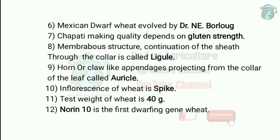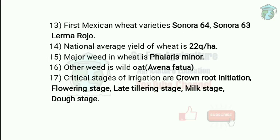Nor Intend is the first dwarf gene wheat variety — this is very important. The first Mexican wheat varieties brought to India were Sonora 64, Sonora 63, and Lerma Rojo. These were introduced during the Green Revolution. After that, many resistant varieties were developed, such as Kalyan Sonora and Sonalika.